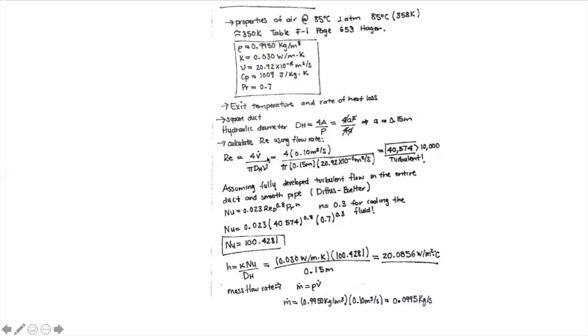We calculate the Reynolds number using the volumetric flow rate. I gave you an equation to calculate Reynolds with either the volumetric or the mass flow rate — I'm using the volumetric flow rate because that's what's given. The formula is four times the volumetric flow rate divided by pi times the hydraulic diameter times the kinematic viscosity read from the data provided. We get approximately 40,000 Reynolds.